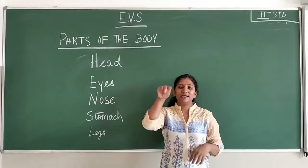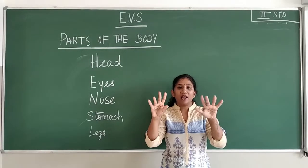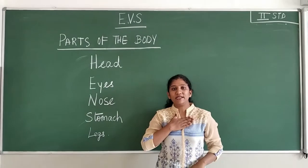This is elbow and this is wrist. I repeat this is wrist and these are our fingers. We have ten fingers, ten fingers in our hands and this is our chest.